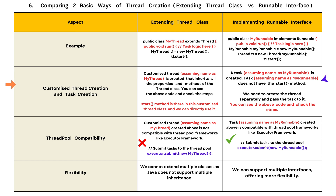When we implement the Runnable interface, a task — assuming the name myRunnable — is created. This task does not have the start method. We need to create the thread separately and pass the task to it. You can see the code and check the steps.